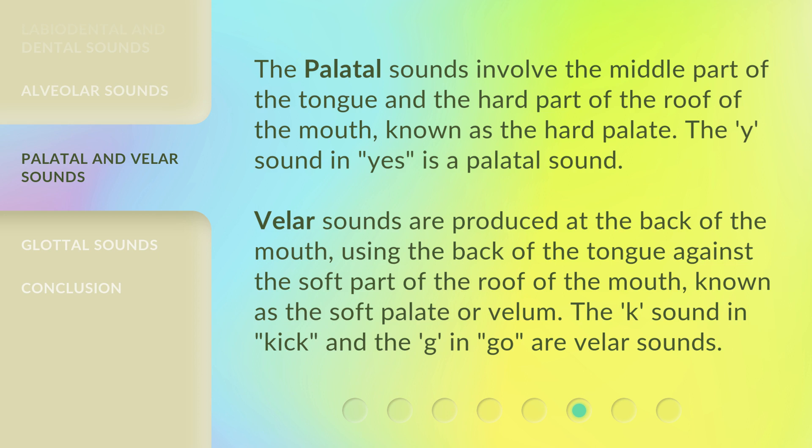Velar sounds are produced at the back of the mouth, using the back of the tongue against the soft part of the roof of the mouth, known as the soft palate or velum. The "k" sound in "kick" and the "g" in "go" are velar sounds.